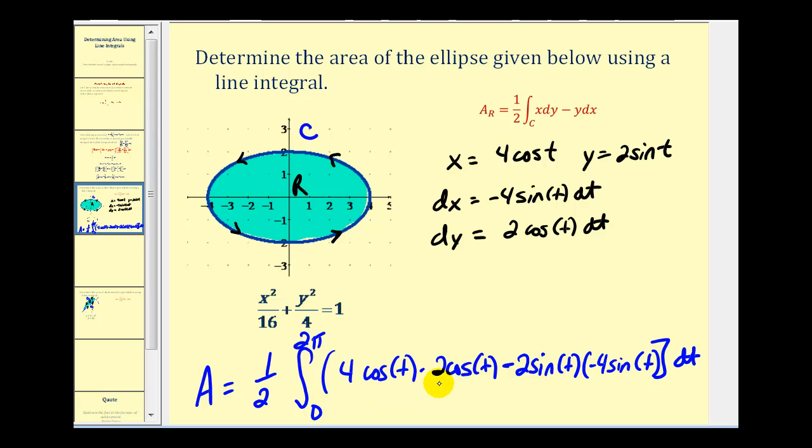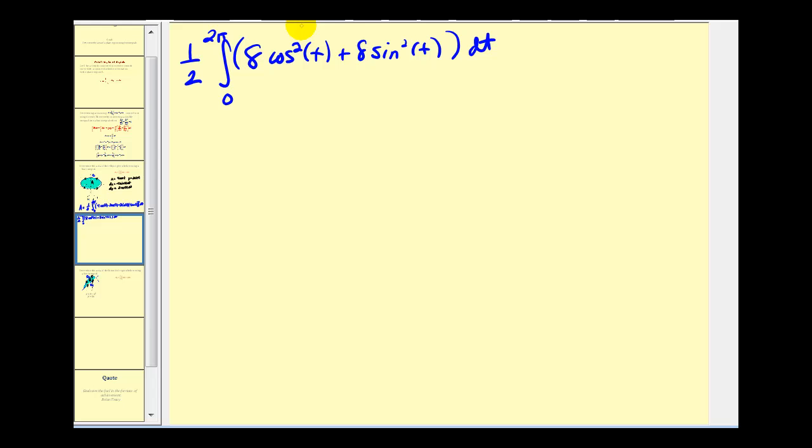Looks like we'll have eight cosine squared t plus eight sine squared t as our integrand. Let's go ahead and evaluate that. So if we factor out the eight, we're going to have cosine squared t plus sine squared t. That's equal to one, so this simplifies nicely.